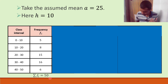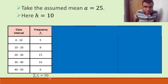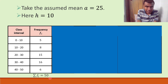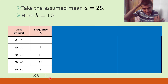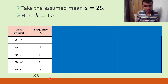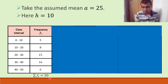They are asking us to find out the mean deviation about the mean. So first we need to find out the mean. Since they've asked for mean deviation about the mean, we have to find the mean first. Now how do we find the mean? Let's see.